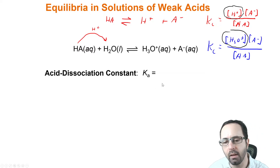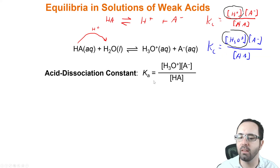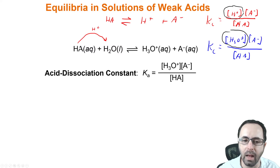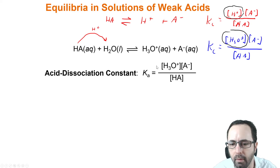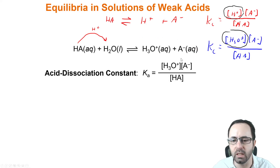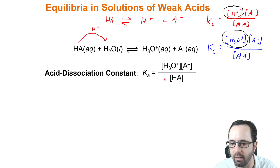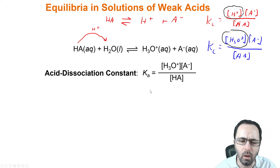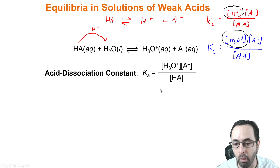The Ka is written no differently than any other K — it's products over reactants, just as we wrote for KC. It's given a special name because it's a specific reaction where HA is giving up its proton, which is what acids do. The Ka gives us a measurement of how strong an acid is. A greater Ka means more products, indicating the reaction goes quite far forward — the acid dissociates significantly. A small Ka indicates the acid does not dissociate significantly and stays mostly as reactants. Bigger Ka means stronger acid; smaller Ka means weaker acid.